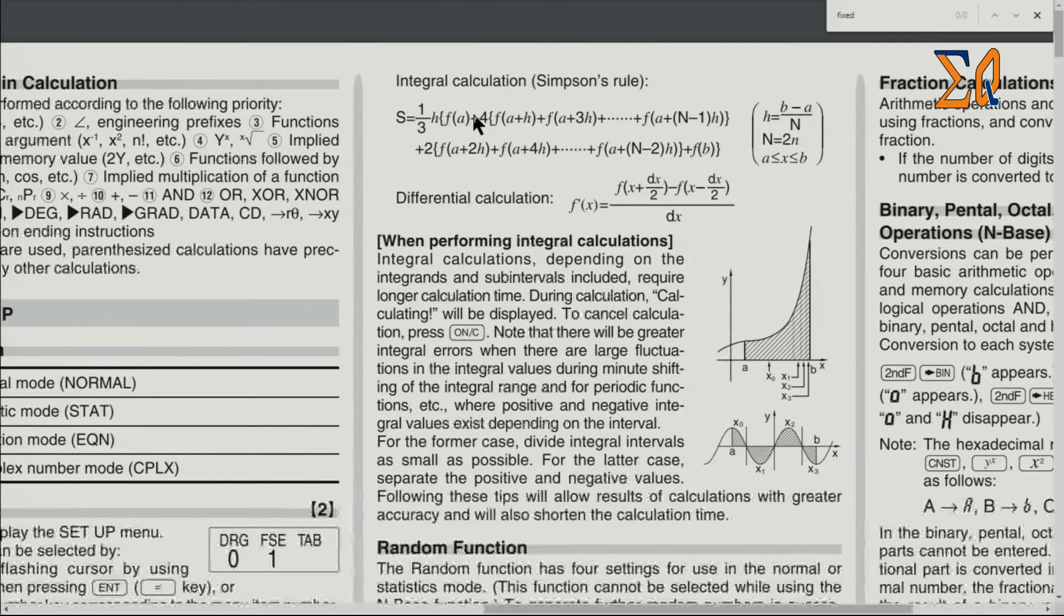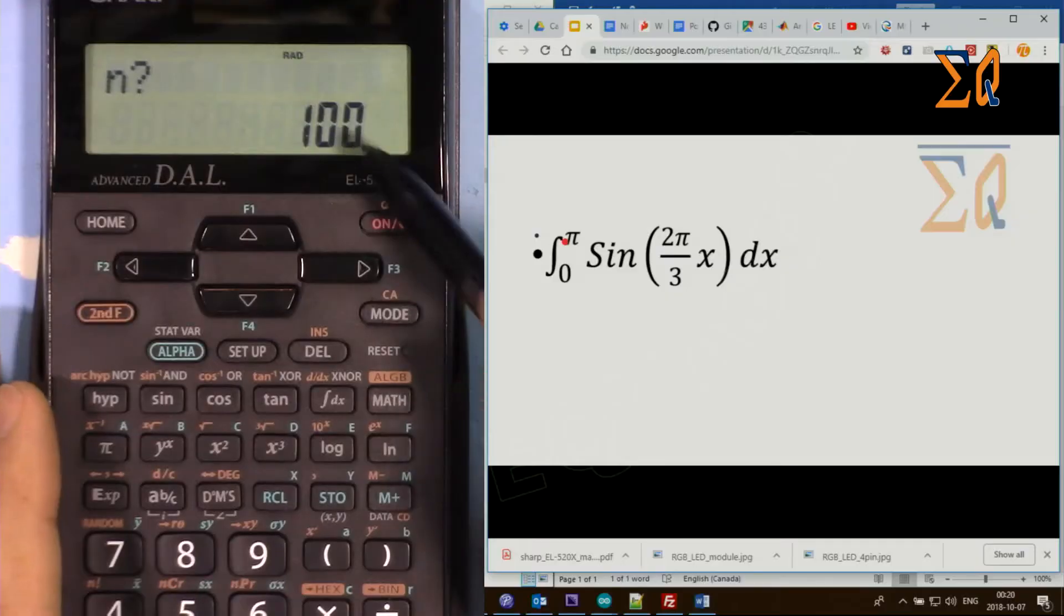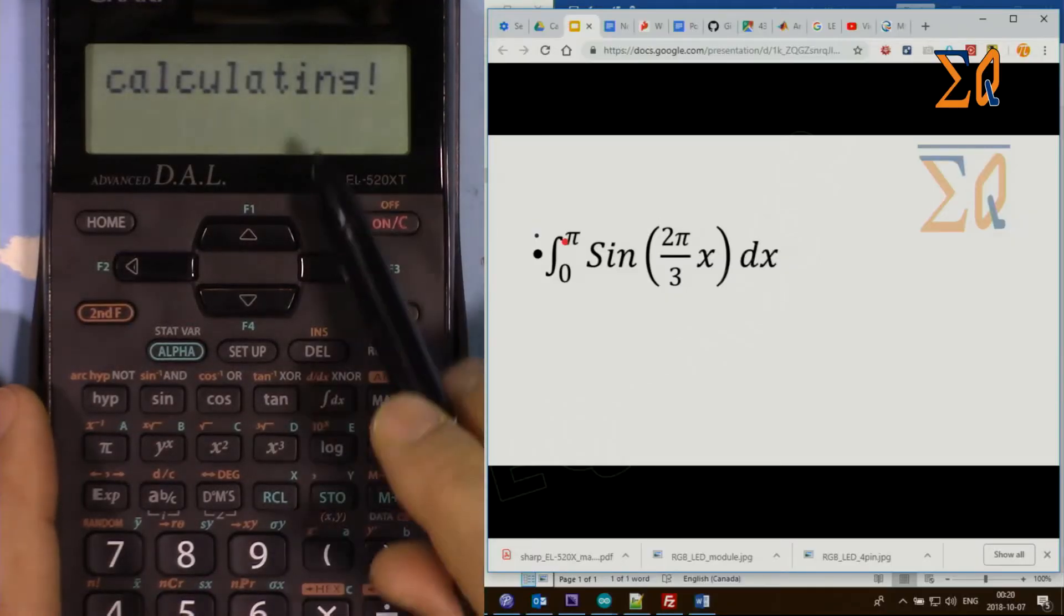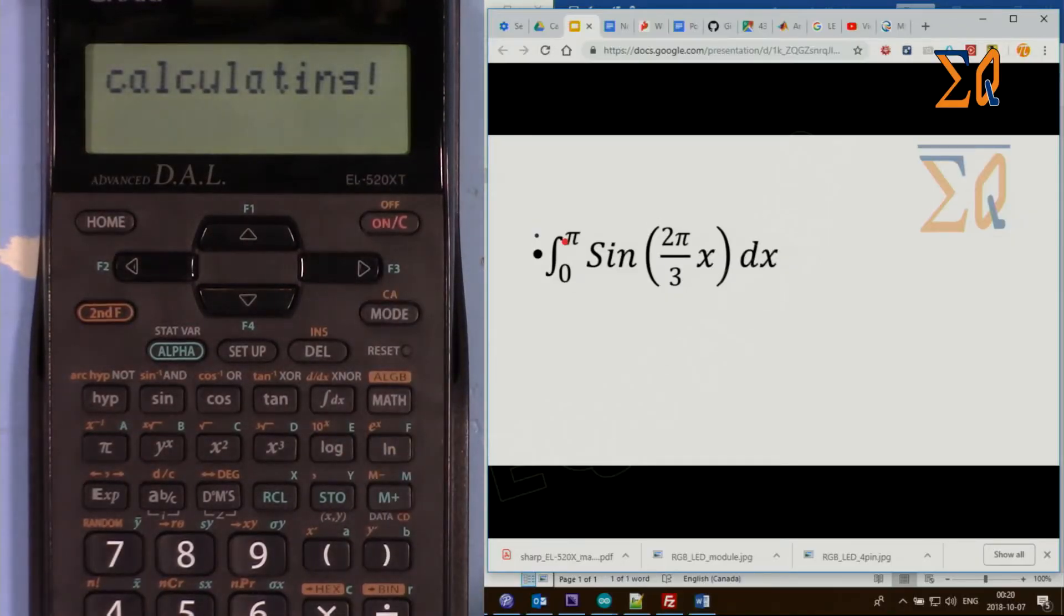Between A and B, 100 is good. Press equal - it says calculating. It takes a moment, just wait for it.